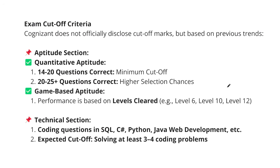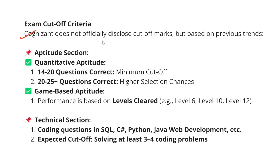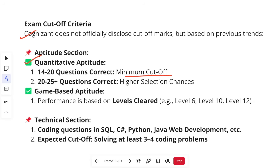Cognizant does not officially disclose cutoff marks, but based on previous trends we know the usual cutoff. If there is high competition, the cutoff can go a bit higher; if low, a bit lower. Since they are hiring in phases, the cutoff tends to go a bit lower. For the aptitude part, you need 14 to 20 questions correct as a minimum usual cutoff. If you have 20 to 25-plus questions correct, you have chances of higher selection.